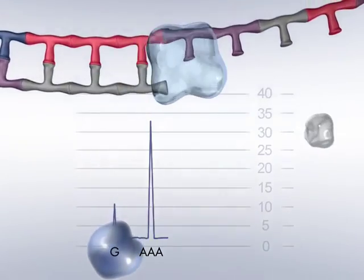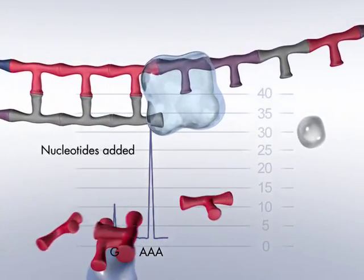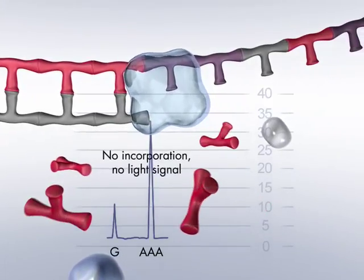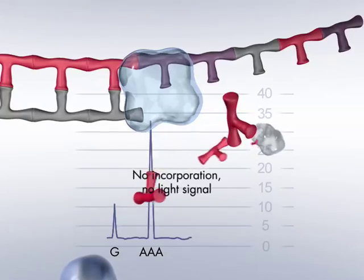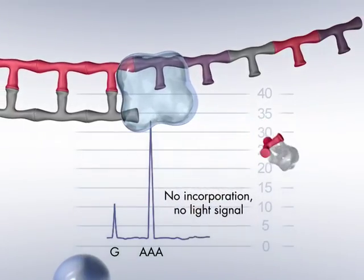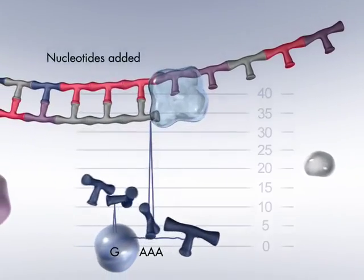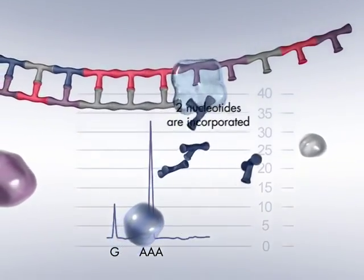Nucleotides are added to the reaction in a predefined dispensation order. If during a dispensation no nucleotides are incorporated, no pyrophosphate is generated, and consequently no light signal is recorded. These blank nucleotide dispensations resulting in no signal can be used as built-in negative sequencing controls.